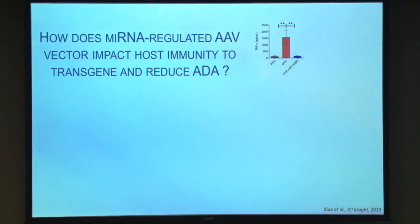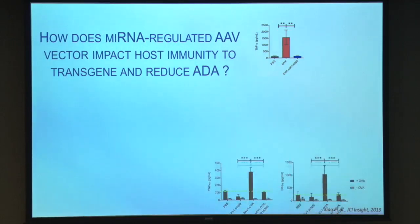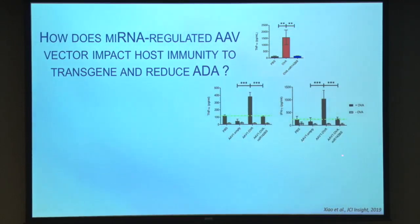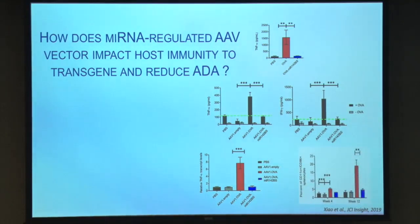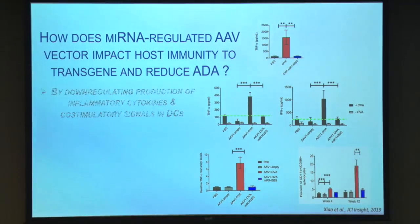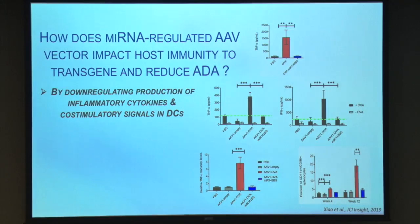The microRNA binding site reduces ADA because it blunts transgene-specific T cells and causes muting of B cell-driven ADA. Looking at the mechanism, we examined cytokines in the blood and saw a huge difference in inflammatory cytokine responses. We isolated spleen for stimulation and again saw a huge difference in inflammatory cytokines. We looked at TNF-alpha in the spleen by PCR and saw a huge difference. We also looked at co-stimulatory molecules in dendritic cells and saw a huge difference.